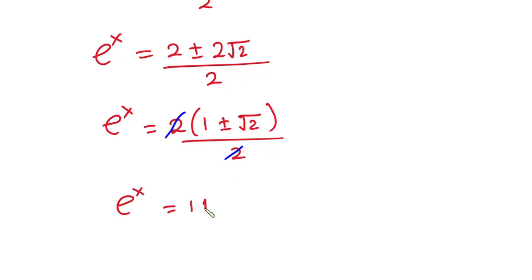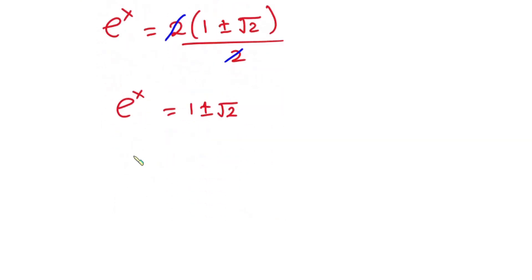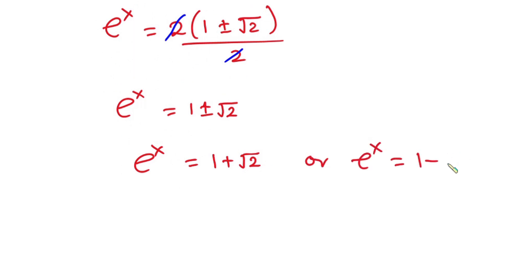This implies that e to the power x is equal to 1 plus square root of 2, or e to the power x is equal to 1 minus square root of 2. Considering the second equation, 1 minus square root of 2 is negative, but we are looking for real solutions, so e to the power x cannot be negative — we will not consider this case.